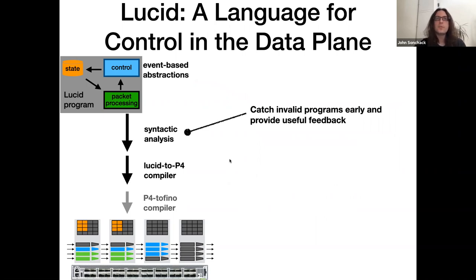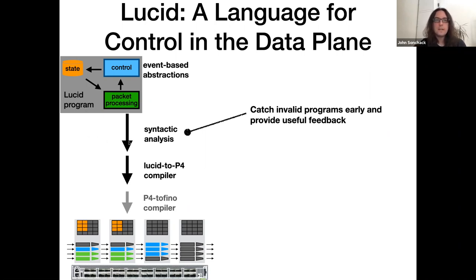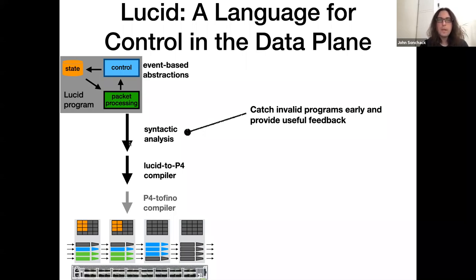The second thing that Lucid introduces is restrictions on the stateful operations you can do in the language. These restrictions are explicitly checked early in compilation based on the syntax of the language itself. Before we even transform Lucid code into some intermediate representation, we know because of these syntactic checks that the program can compile to a valid sequence of instructions through the underlying hardware. The backend then only has to worry about finding an optimal layout for those instructions in the underlying pipeline.